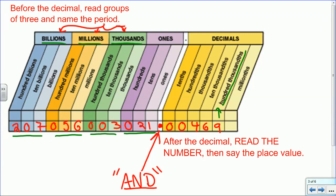So altogether, this is 207 billion, 56 million, three thousand, twenty-one, and four hundred sixty-nine hundred thousandths. That's how we would read this number.